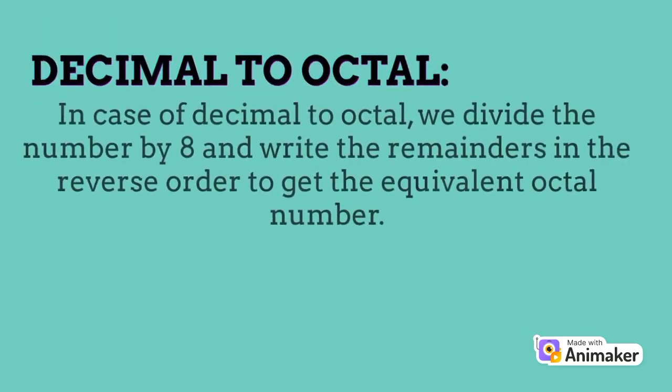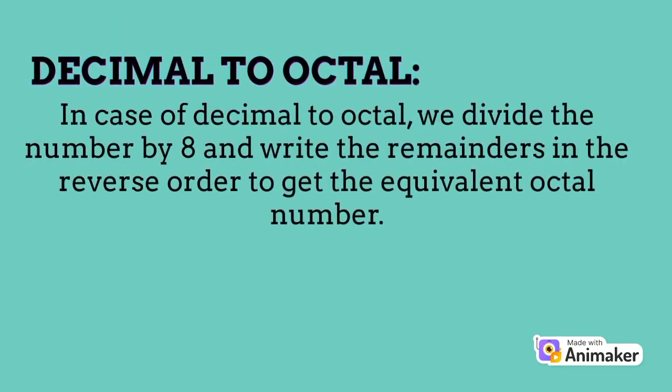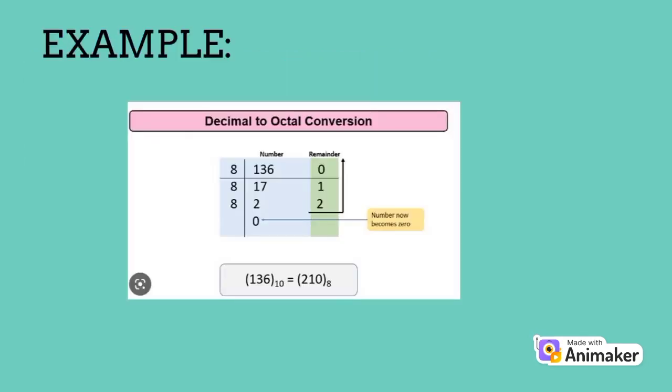Decimal to octal. In the case of decimal to octal, we divide the number by 8 and write the remainders in reverse order to get the equivalent octal number. Here is an example of decimal to octal conversion.